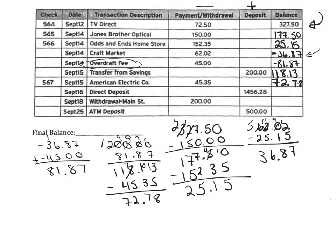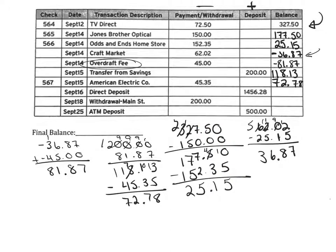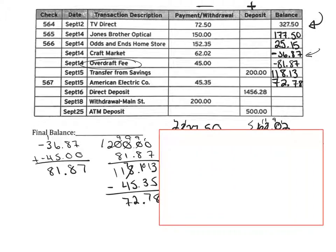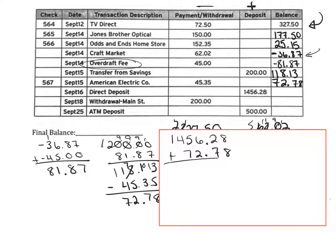Now she's getting paid. A direct deposit means they're putting money in. So we need $1,456.28 plus the $72.78 we already have. Adding those together — carrying the 1 and bringing the decimal — this is $1,529.06.